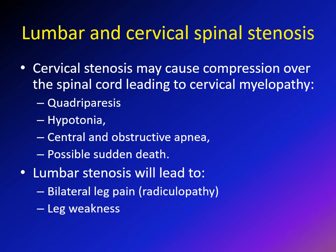Patients with achondroplasia may have lumbar and/or cervical spinal stenosis, meaning the vertebral canal in which the spinal cord or its roots run may be tight. Cervical stenosis means the canal at the cervical level is tight and can compress the spinal cord, leading to cervical myelopathy, which can cause quadriparesis, hypotonia, central and obstructive sleep apnea, and sometimes sudden death.